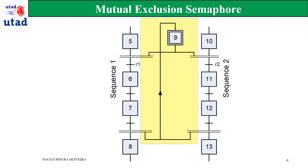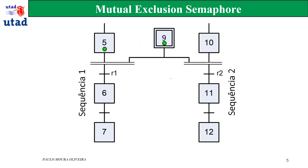Regarding the mutual exclusion that we have spoken about in the previous video, there is one structure we call the semaphore. This consists of an initial step, and this step is going to control the access between sequencing 1 and sequencing 2.